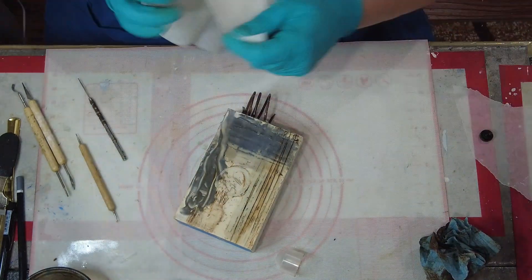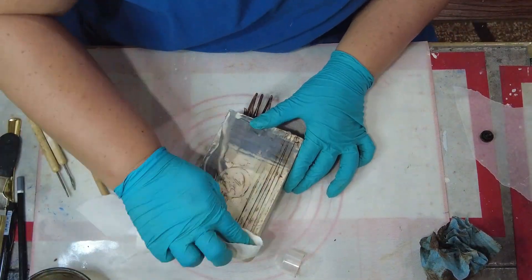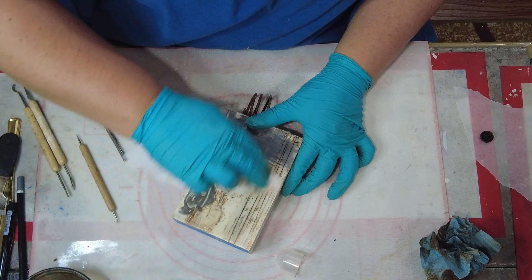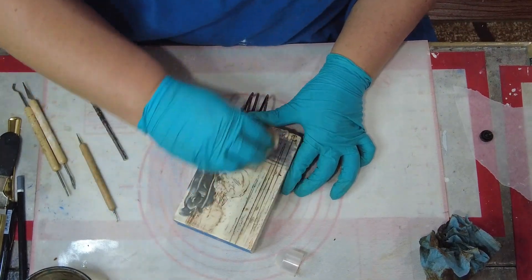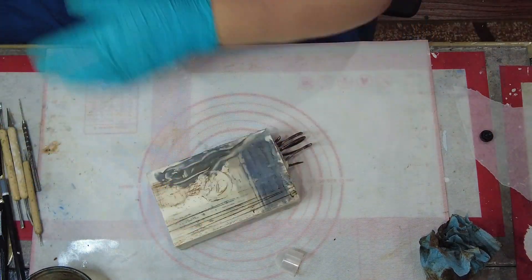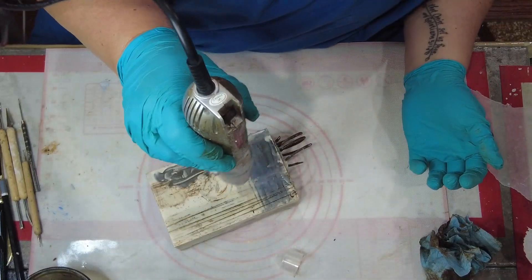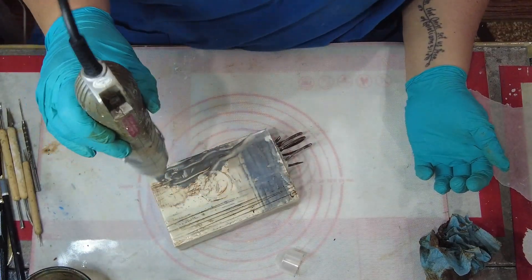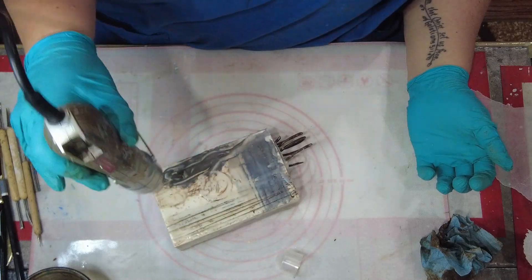Often once I get these marks colored in and as much of the excess wiped off as I'd like, I will use my small heat gun to do the fusing because it's a much lighter heat and I have a tendency to not blow my lines out as much when I use it.